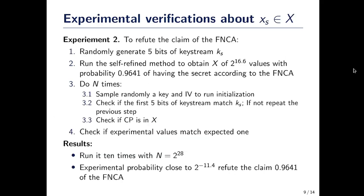The second experiment is to refute the claim about the probability from the Fast Near Collision Attacks. We choose five bits of keystream, run the self-refine method with these five bits, and obtain at the end a set X with about 2 to the power 16.6 values. Only now do we choose the key and IV, run the initialization process such that the five first keystream bits match the chosen bits, and check if the core part is in the set X. We ran it many times, and the experimental probability that the good state is in the set X is 2 to the power minus 11.4 — a lot less than what is claimed by the Fast Near Collision Attacks.